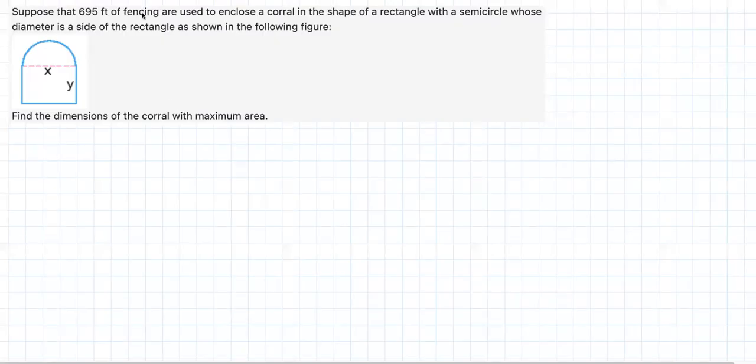Hello guys, I'm back to help you become a better problem solver, let's go over this together. Suppose that 695 feet of fencing are used to enclose a corral in the shape of a rectangle with a semicircle whose diameter is the side of the rectangle as shown in the following figure.